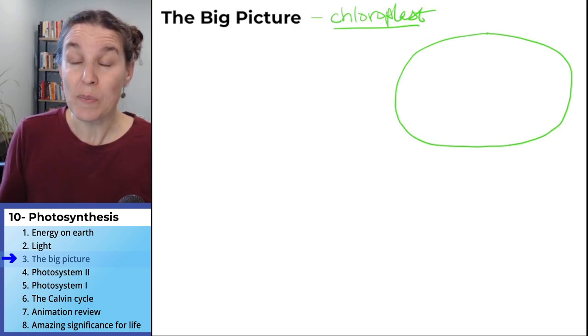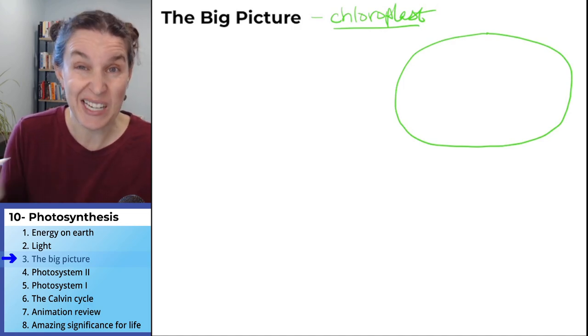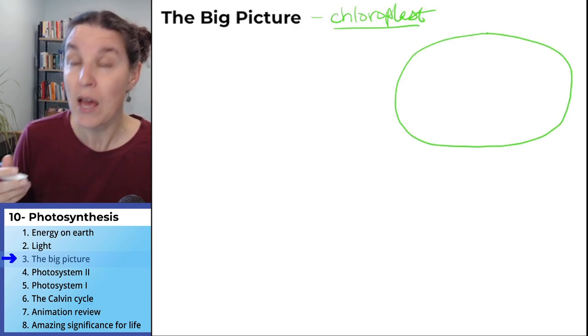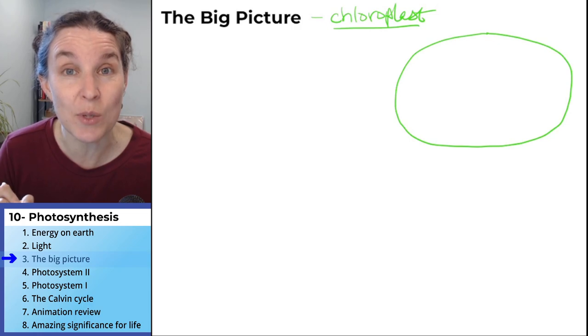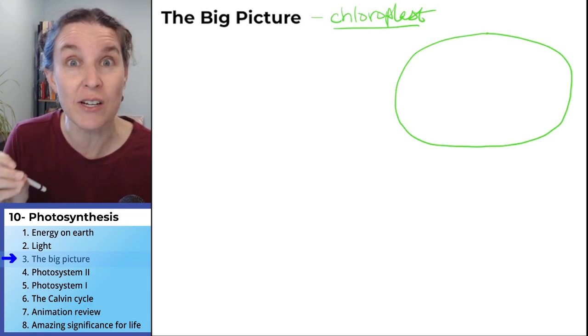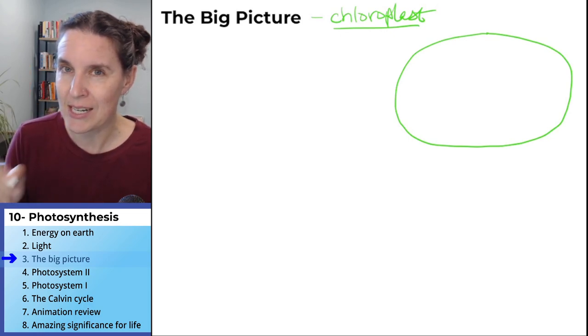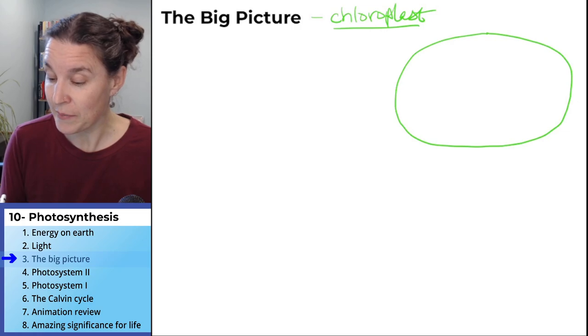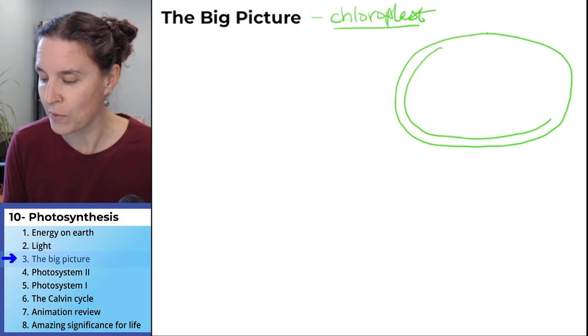The chloroplast is actually really similar to a category of bacteria. I can't remember if they're blue-green bacteria, but there's a group of bacteria that are really similar to these guys, just like there was a group of bacteria that are really similar to mitochondria, which is an interesting thing to think about. Also, like mitochondria, the chloroplast has a double outer membrane.